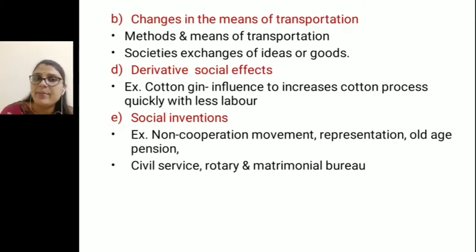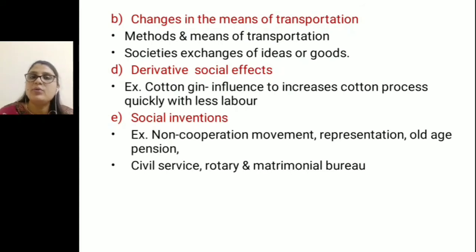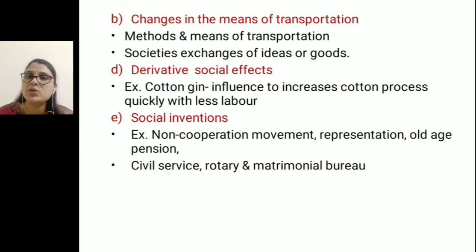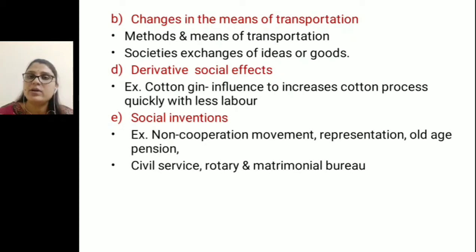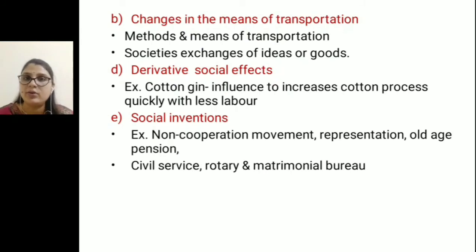Civil service, rotary clubs, and matrimonial bureaus are also forms of social innovation. Rotary clubs and youth clubs have a motto — people come together, share ideas, and form opinions on particular issues. Activities are run by youth clubs. The matrimonial bureau is a marriage site where a boy or girl can meet online, share their profiles for marriage purposes. These are new technologies from the past 10 to 15 years.